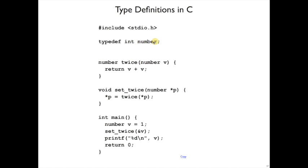And that means, in fact, that number is just an alias for the type int. But I can use it as a type at the same level as int. I can say that twice here takes a number and returns a number.